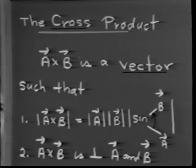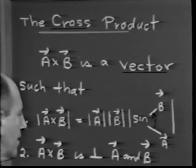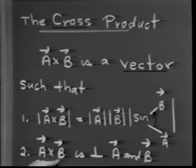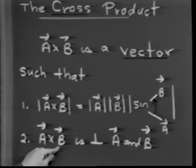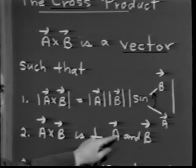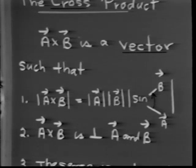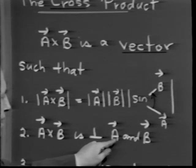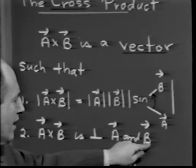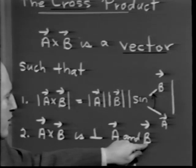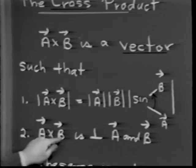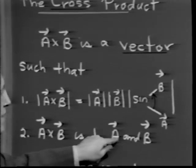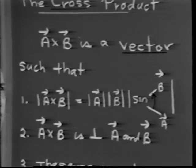The direction of a cross b is, by definition, perpendicular to both a and b. In the event that a and b are not parallel, they determine a plane, and a cross b is a vector perpendicular to that plane.